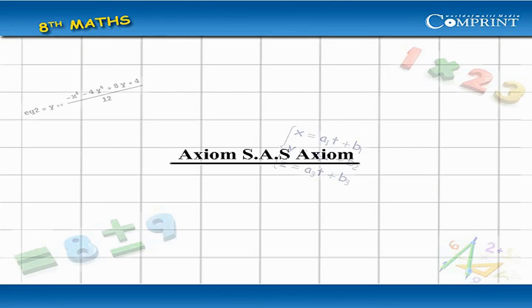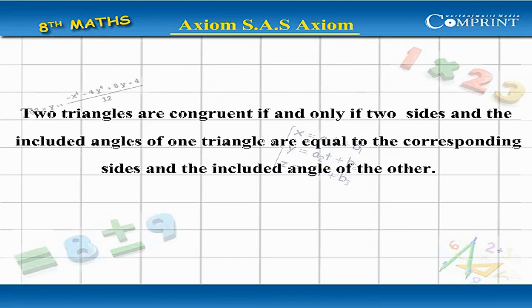Axiom S.A.S. Two triangles are congruent if and only if two sides and the included angle of one triangle are equal to the corresponding sides and the included angle of the other.